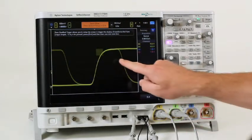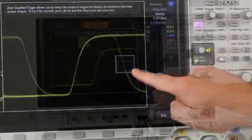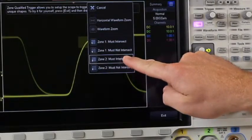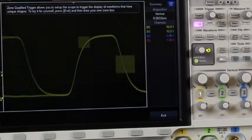I also have the ability to draw a second box with either must intersect or must not intersect criteria. As shown in this real signal example, design engineers will get their job done faster during the debug process with faster waveform update rate and now coupling it with InfiniScan zone touch triggering. If a design engineer can see it, they can trigger on it.